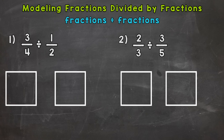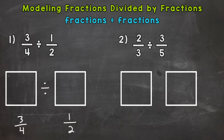We have three-fourths divided by a half. So essentially what we're doing, we're pulling groups of a half out of three-fourths and seeing how many groups we can make. So our squares below the problem are going to represent three-fourths divided by one-half. The first square is going to be three-fourths and the second square is going to be a half. Both squares are going to be split similarly, but the pieces we fill in for each fraction will be different.